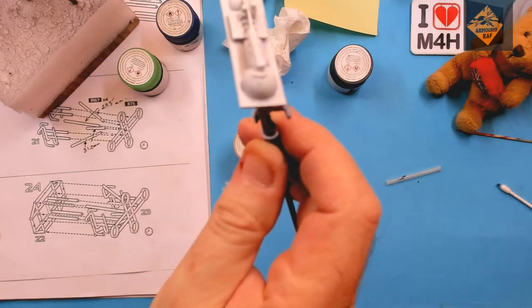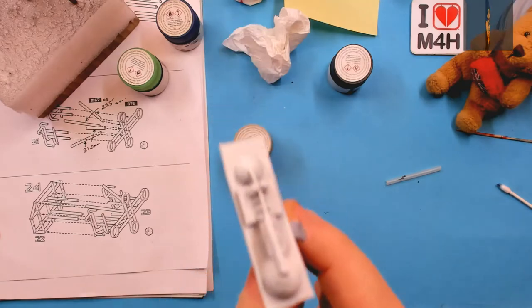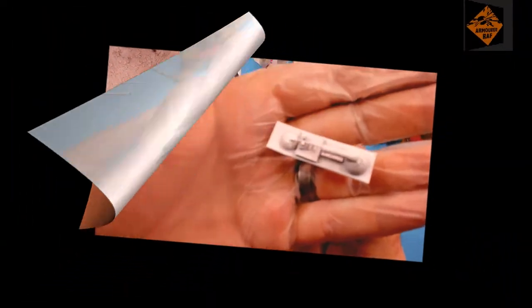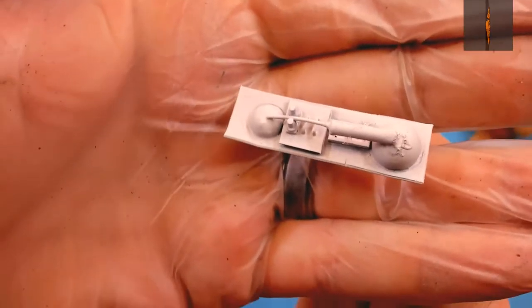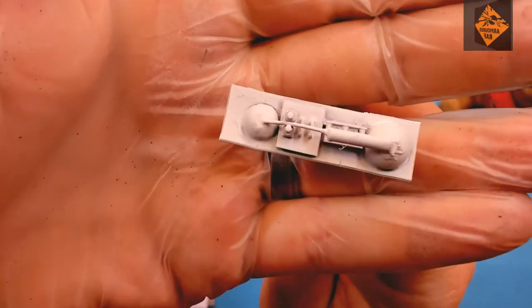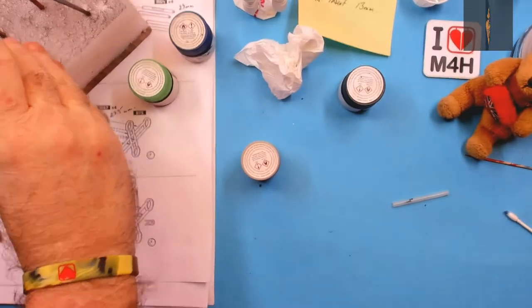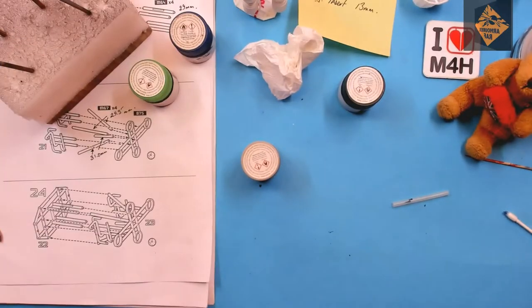Before we do that, let me just give you a quick show and tell of one of the modules. These have been primed in black, given a zenithal highlight in white, then finished off with a thin coat of white all over, all done from rattle cans. I'm quite impressed with the result I've got. So, let's crack on.